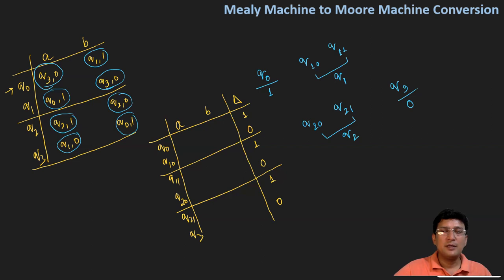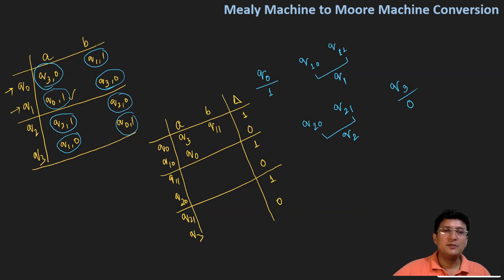For q0, on taking symbol a it goes to q3, and on taking b it goes to q1 that produces the output one — so that is q11. For q10, it goes to q0 that produces the output one, referring to that transition. And on the other symbol it goes to q3 that produces the output zero, so it remains at q3.